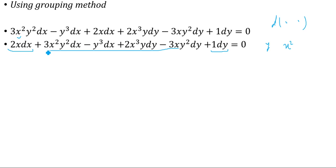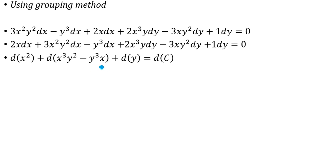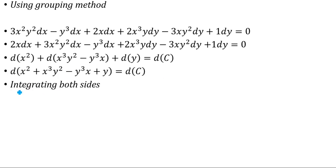We identify which terms go together. 3x²y² and 2x³y go together: differentiating x³ with respect to x gives 3x², with y² common, so the function is x³y². Similarly, y³ and 3xy² go together: the function is y³x. Taking d common, we have d(x²) + d(x³y²) + d(y³x) + d(y). Integrating both sides gives the general solution: x² + x³y² − y³x + y = C.